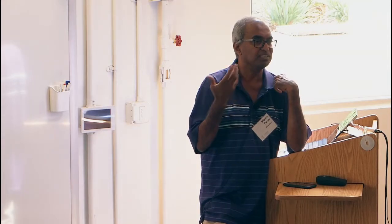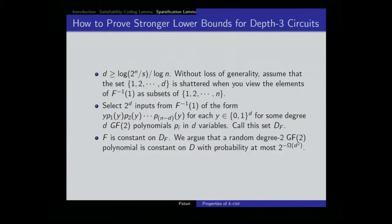We multiply this probability with the number of sets D_f. Each case-ENF that accepts a large enough number of ones of the random degree-2 polynomial leads to a nice set D_f, and a random degree-2 polynomial cannot be constant on such a set. We multiply this probability with the number of case-ENFs, and if the product is less than one, we will have shown there exists at least one degree-2 polynomial that requires size 2^(n - o(n)). So that's the overall argument — so far it's a trivial counting argument.